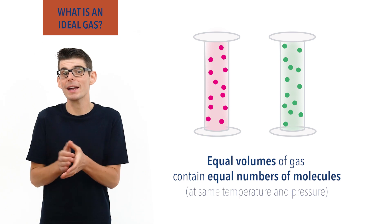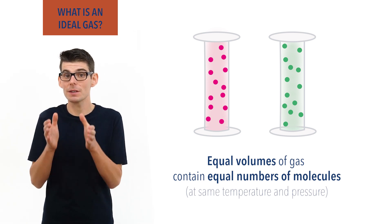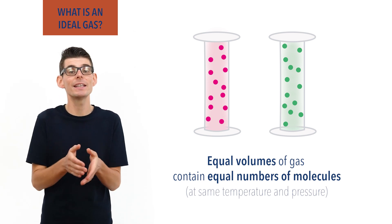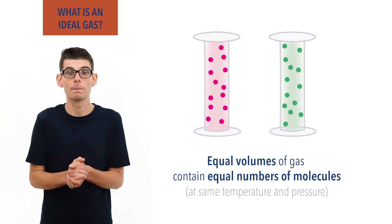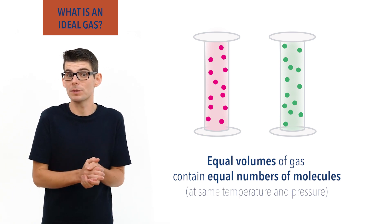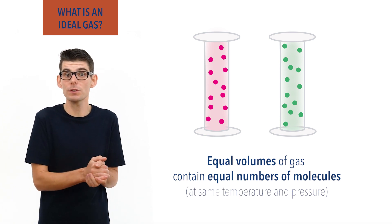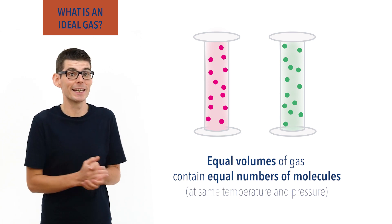This proposal got picked up by scientists many years later and led to the idea of the mole, with the value one mole represents being called Avogadro's constant in honor of Avogadro and his idea.